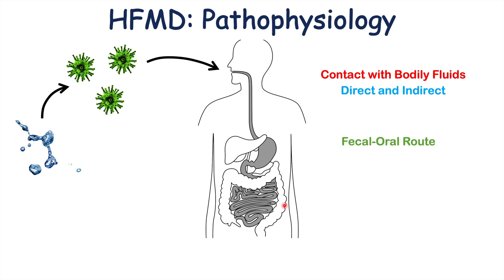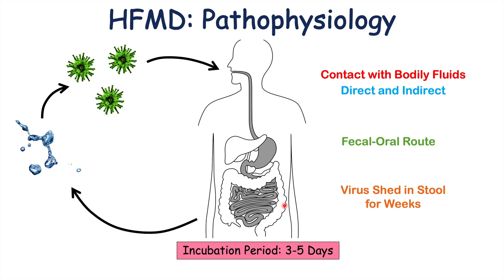The fecal-oral route of transmission is an important one, especially in children. The virus can be shed from respiratory secretions, oral secretions, or through the stool, and this can last for weeks, making it very infectious. When an individual becomes infected, it takes about three to five days before symptoms appear — that is the incubation period.